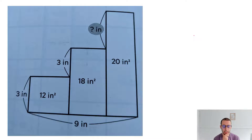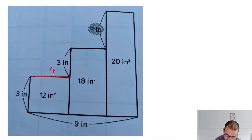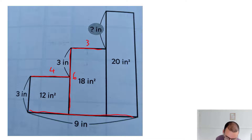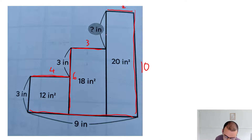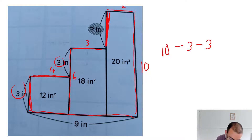So what can we work out? This length is four. This whole length is six, which means that this length is three. This whole length is nine, and we already have a four and a three. So this length up here is two to make nine, which means that this whole length is 10. And so this bit, which we care about, is going to be 10 minus three minus three. So this one is going to be four inches. The answer here is four.